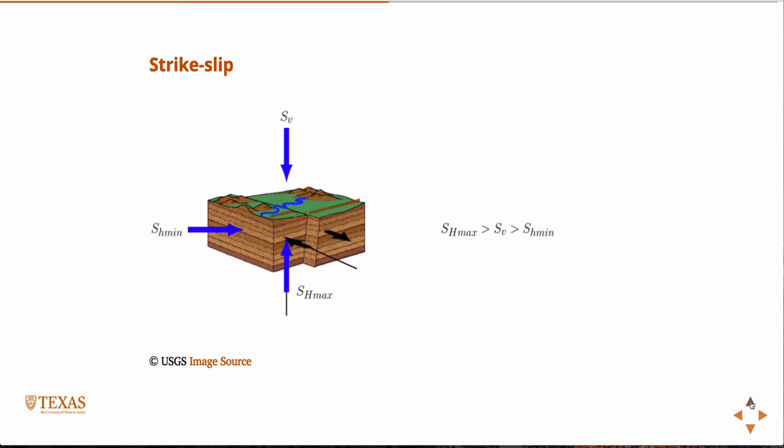I just didn't want to draw the blue line that way and give you the impression that SH max is always parallel to the fault. So, it has to be some component of SH max along the fault, but it could also be a component normal to the fault.